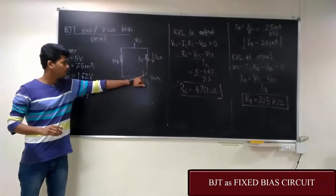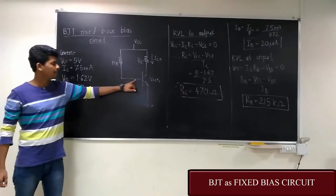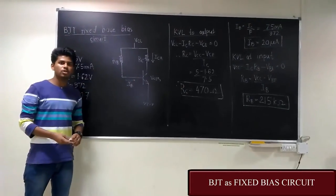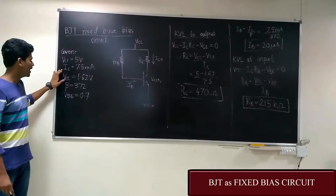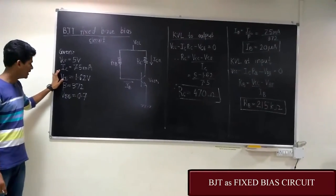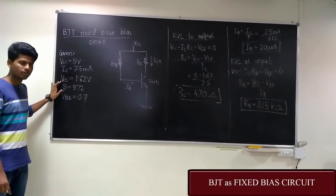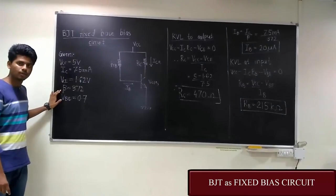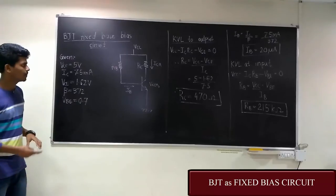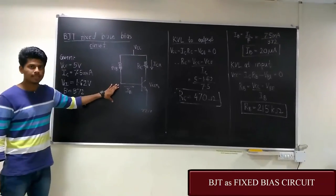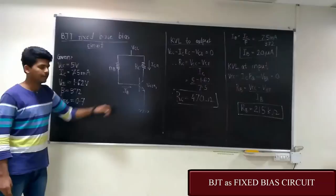A collector resistance is applied to the collector, a base resistance is applied to the base. The given values for a fixed bias circuit are VCC is equal to 5V, IC is equal to 7.5mA, VCE is 1.62V, beta value is 372, and VBE is 0.7V. Now for designing we have to obtain the values of RB, RC, and IB.